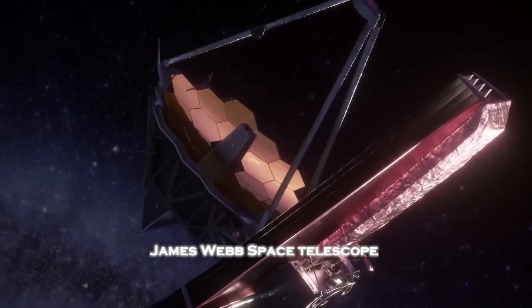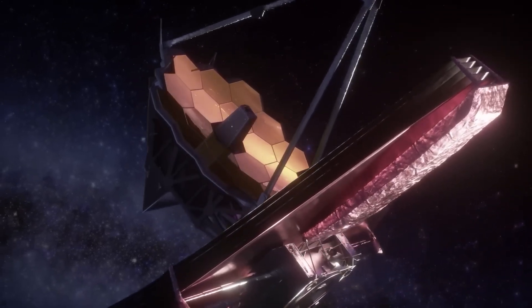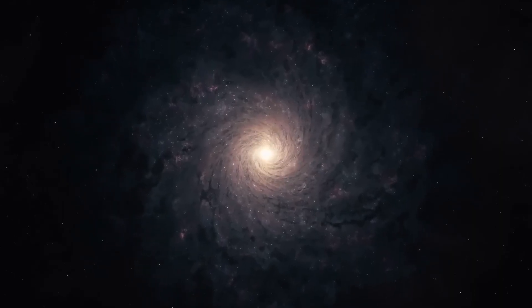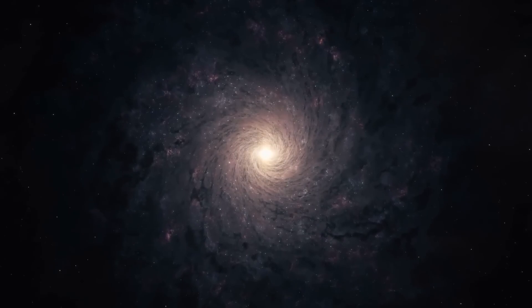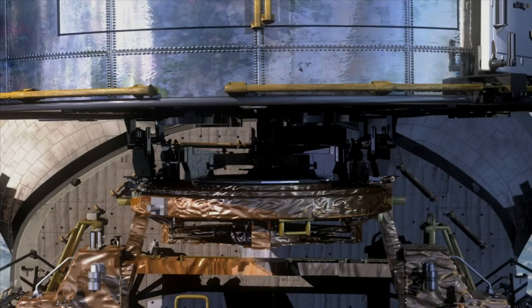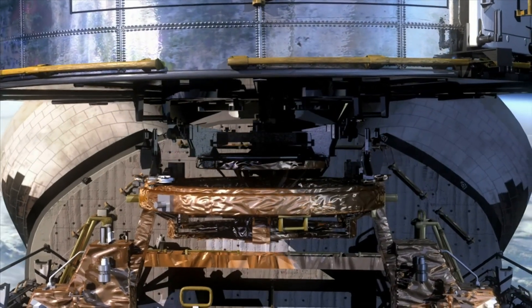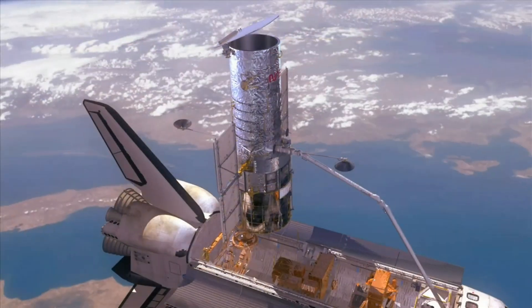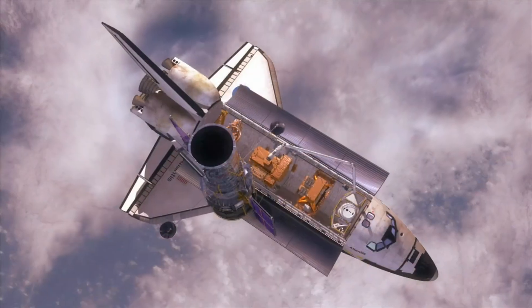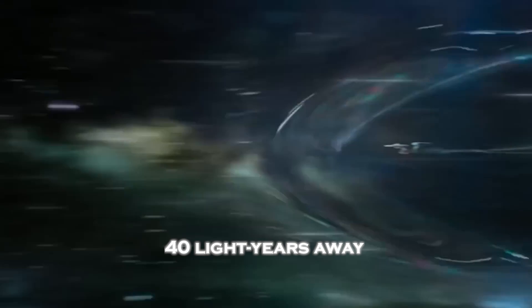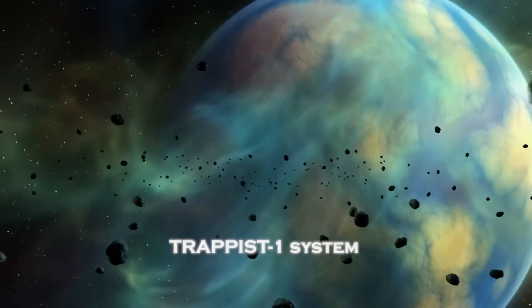The James Webb Space Telescope has once again proven to be humanity's most powerful tool for unlocking the mysteries of the universe. Designed with infrared capabilities far surpassing any predecessor, Webb has now detected a highly habitable super-Earth sitting a mere 40 light years away in the Trappist-1 system.